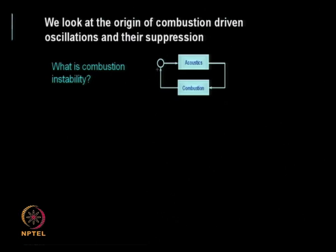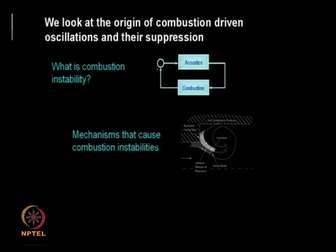If you looked at the history of the moon program, America's race to the moon used the F1 engine in the Saturn rocket, which had serious instability problems that America had to work hard to overcome. So many rockets, ramjets, and industrial burners have this problem. Usually this problem is identified only at the later stages of a program, and then it is very hard to fix. In this lecture we look at the origin of combustion-driven oscillations, the mechanisms causing them, and active and passive control.